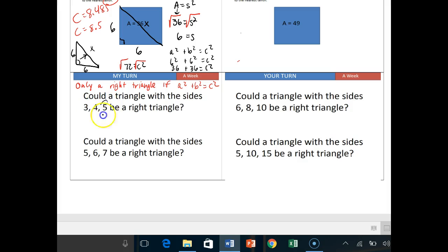So we'll say, remember the longest side is always going to be the hypotenuse. That's an important one. So this will always have to be c. So we'll say, is 3 squared plus 4 squared equal to 5 squared? That's a question we're asking ourselves.